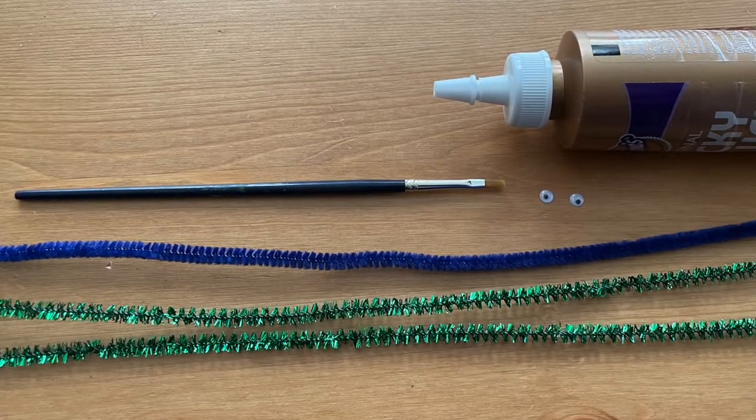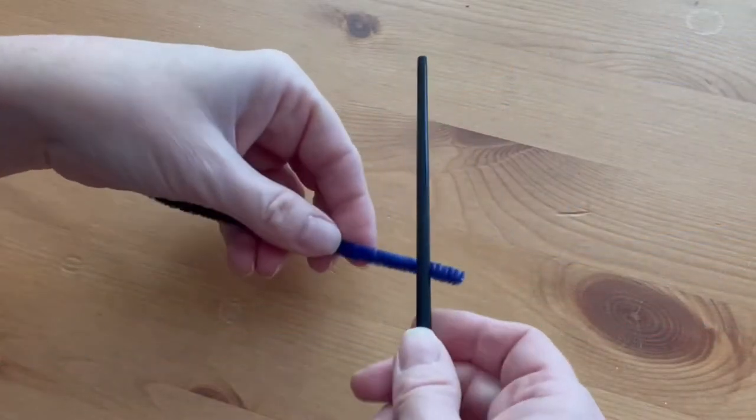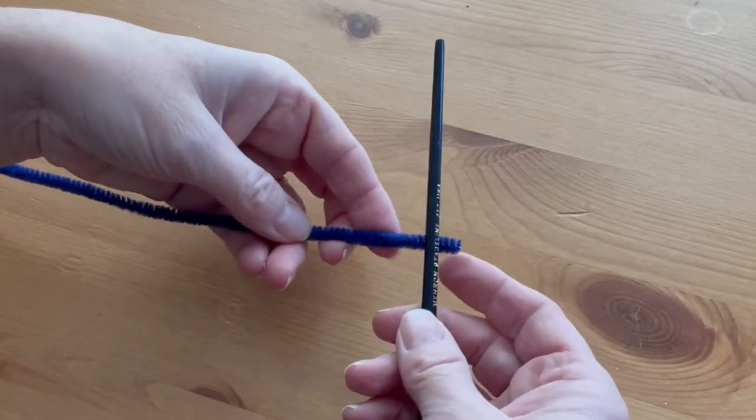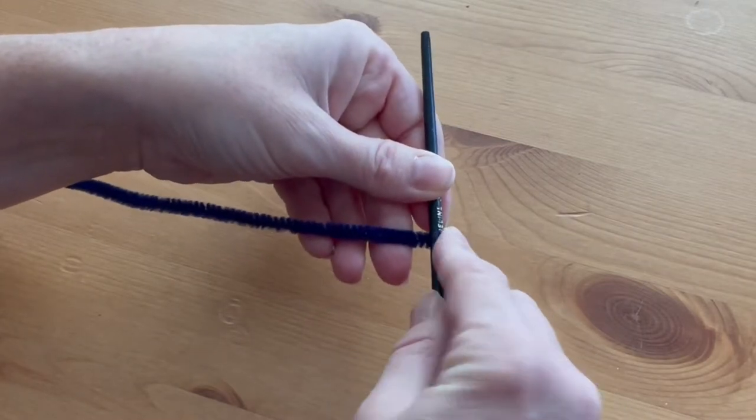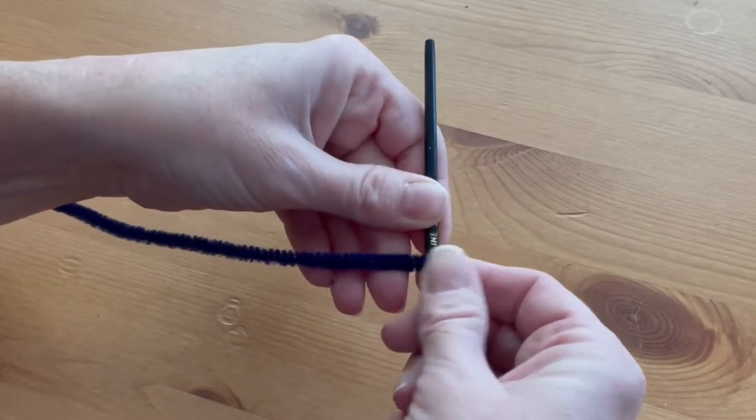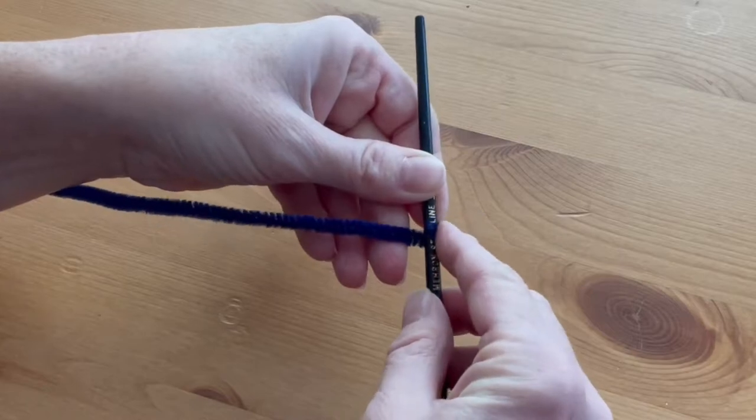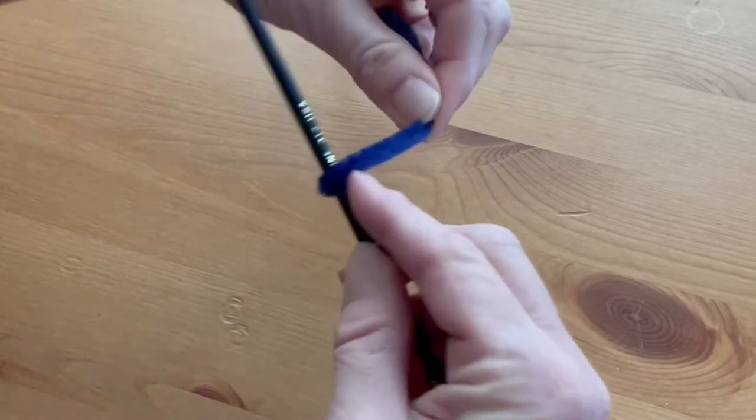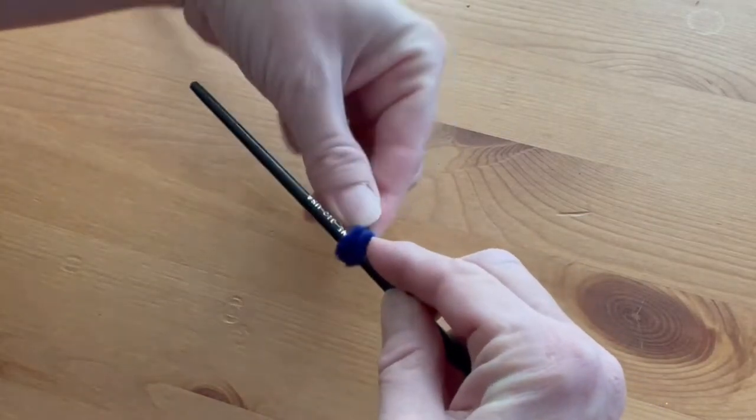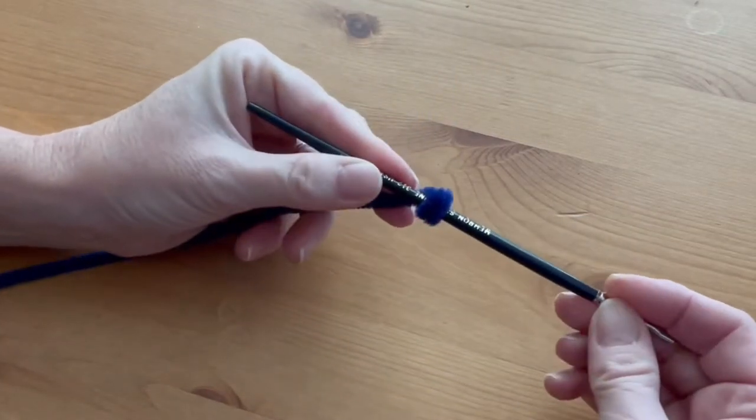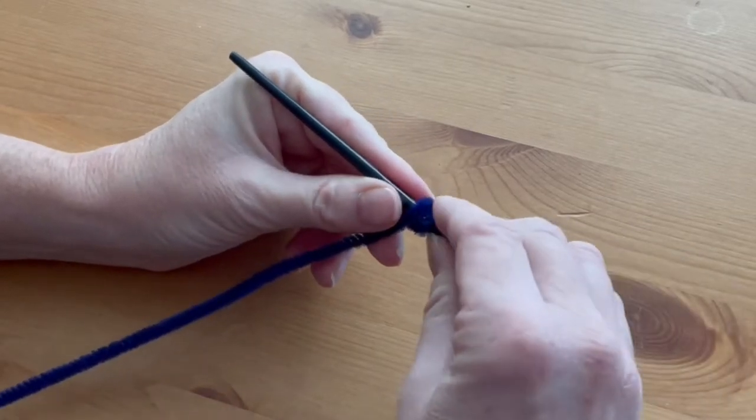To make the body of the dragonfly, hold the blue pipe cleaner against the handle of a paintbrush. We're going to make the head first, so hold the end against the paintbrush and wrap the pipe cleaner around in a little bundle three times. That will make the head of the dragonfly.